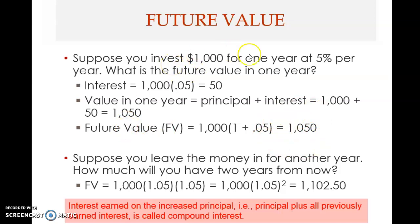That is the value of your investment one year from now if you invest one thousand dollars now and earn an interest rate of five percent a year. Note that in this problem there are four elements — three are known and one is unknown. The three known elements are: first, the present value (PV) of one thousand dollars; second, the interest rate of five percent per year.